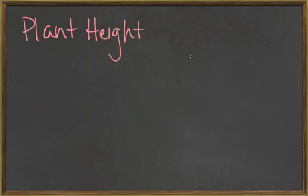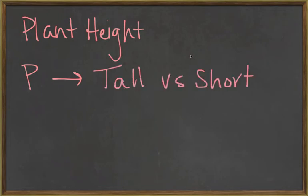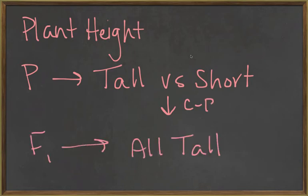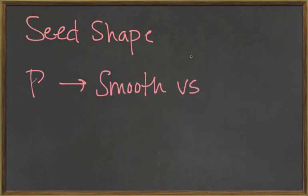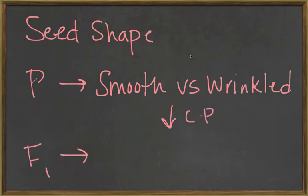Take another of his crosses that he did. Say we took plant height. My P generation would have been a tall versus short. When I allowed that to cross-pollinate, my F1 generation turned out to be all tall. Say we looked at seed shape. You have two options. My parent generation could either be smooth or wrinkled. When they are allowed to cross-pollinate, my F1 generation, my new generation, my offspring, my first filial generation, were all smooth. From all of these different crosses, and you could do it for every single one of them, he came up with some very important conclusions, and we will get to those in class.